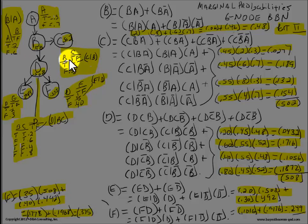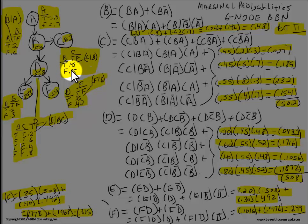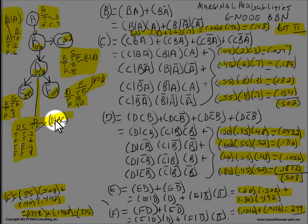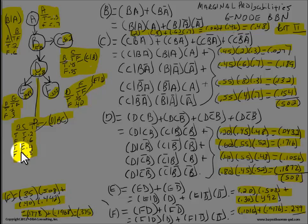For C, the conditional probability of C given B is 0.45 and C given not-B is 0.55. For D, the probability of D given B and C is 0.2, the probability of D given not-B and C is 0.6, the probability of D given not-C is 0.8, and the marginal probability for D is 0.508.